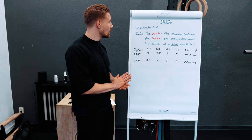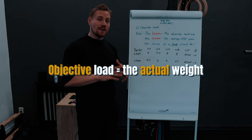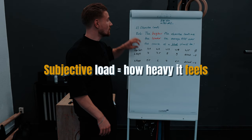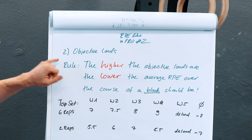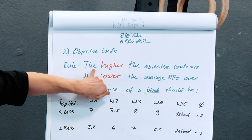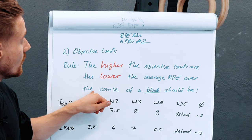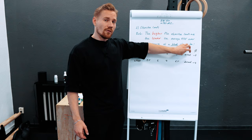Moving to rule number two: setting up RPEs like a pro based on objective loads. Objective load means the more weight you have on the belt, the higher the objective load — it's not about how heavy something feels subjectively, it's about the absolute amount of weight used. The rule is: the higher the objective loads, the lower the average RPE over the course of a block should be. In rule number one we talked about a week; now we're talking about a block.